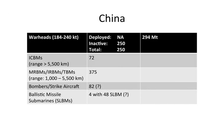Here's China. The yield range of their warheads is between 184 to 240 kilotons, with a total of 250 warheads. It's unlikely that China actually has its warheads deployed on its weapons systems — they seem to be stored separately, so they would go into the inactive category — with a total megatonnage of 294 megatons.